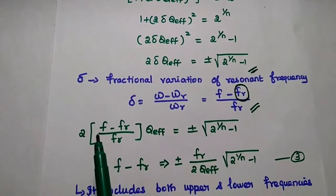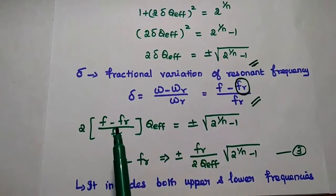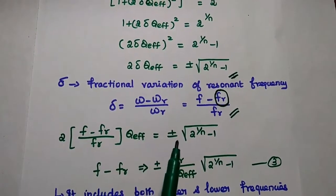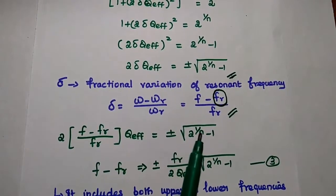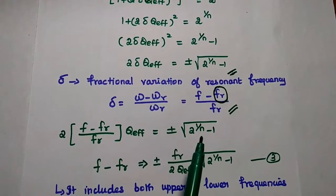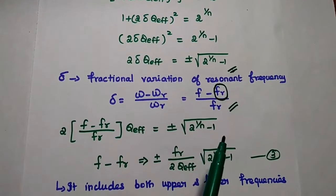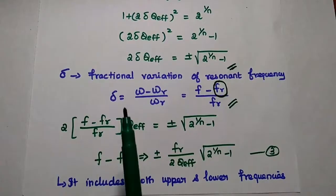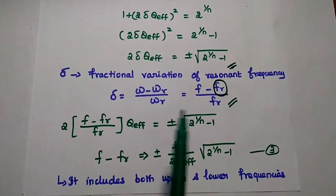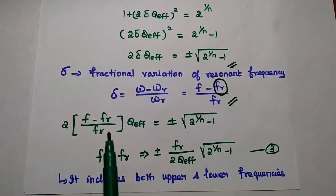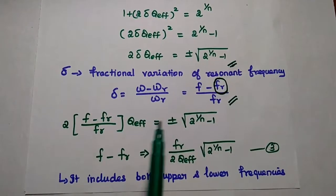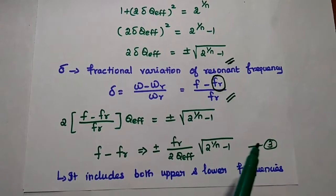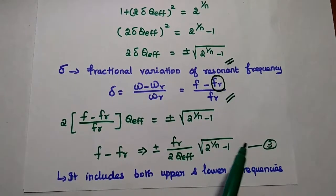Substituting δ gives: 2 × (f minus f_r)/f_r × Q_f equals plus or minus √(2^(1/n) minus 1). Rearranging, we move 2 and Q_f to the denominator and f_r to the numerator on the right side. Consider this as the third equation.